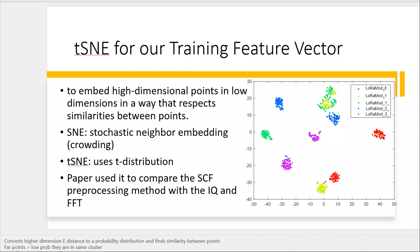What t-SNE does is it takes this high-dimensional data, finds the relationship between one point and another, and converts it to a lower-dimensional space — essentially a one-dimension visualization.